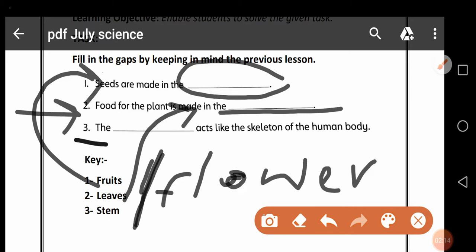No. 3: The blank acts like the skeleton of a human body. Which part of the plant acts like the skeleton in the human body? And that is a stem. Stem. You will fill in the third blank the word stem, S-T-E-M.